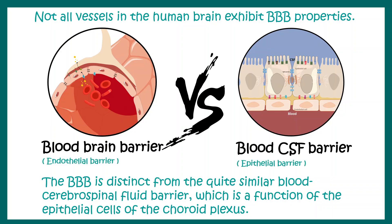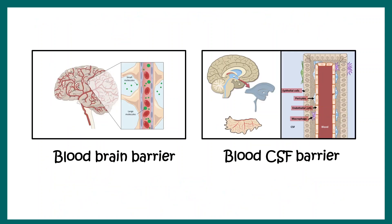The blood-brain barrier is an endothelial barrier, whereas the blood-CSF barrier is an epithelial barrier. It really matters where the tight junction is located. In the blood-brain barrier the tight junction is located in the endothelial cells, whereas in the blood-CSF barrier it is situated in the epithelial cells. This video pretty much summarizes the structure, anatomy, and functions of the blood-brain barrier.